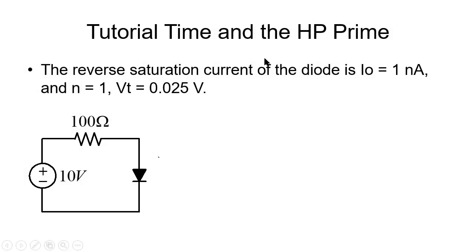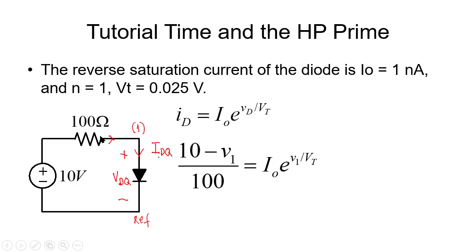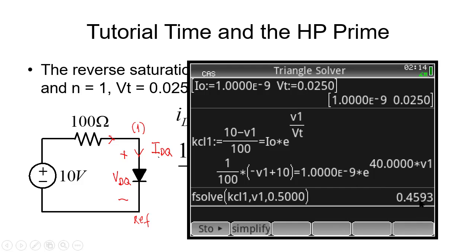Tutorial time on the HP Prime. For this diode, we know: reverse saturation current I_s = 1 nA, fabrication coefficient n = 1, thermal voltage V_t = 25 mV. We are asked to find the quiescent point — I_Q and V_DQ. We use the diode's exact model equation, set up the node equations, and solve. We find the diode voltage is V_DQ = 0.4593 V.